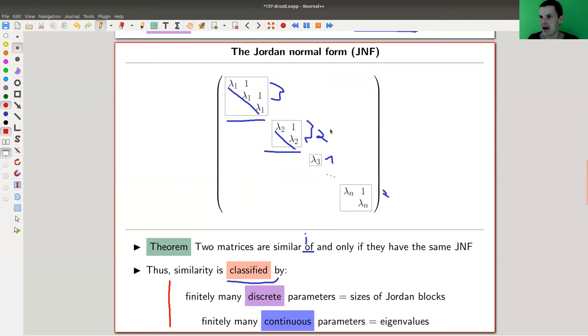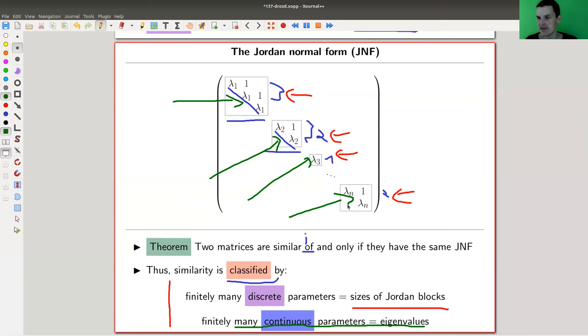By finitely many discrete parameters which are my block sizes - a certain sequence of them, the sizes of Jordan blocks - and finitely many continuous parameters which are really just the eigenvalues. The eigenvalues can now take any complex number. So that's already much more difficult in some sense, and still very satisfying. It's also not so bad. So here just one discrete parameter.